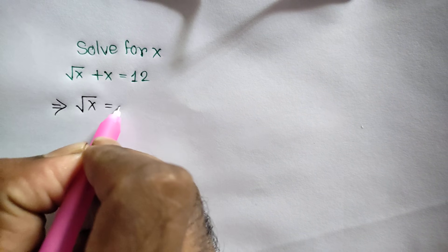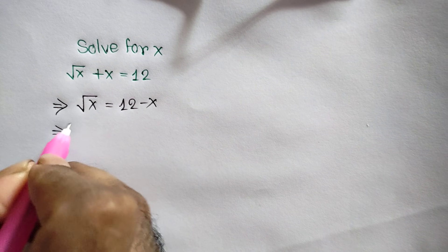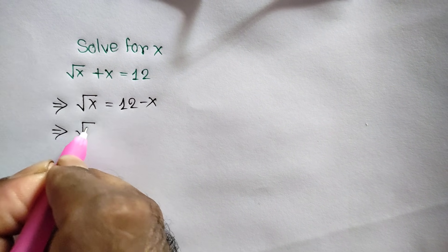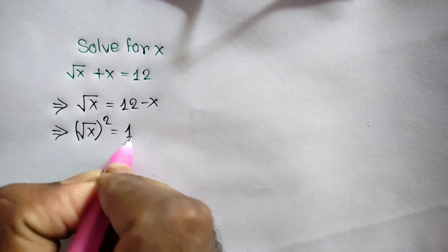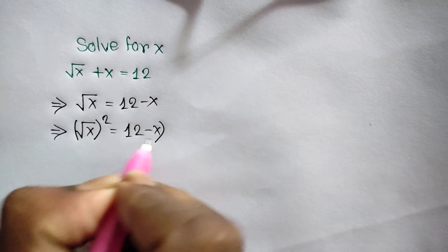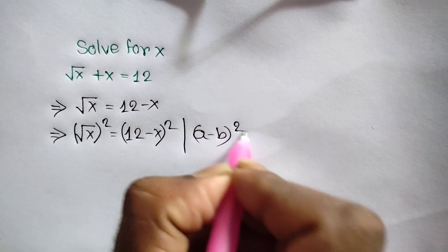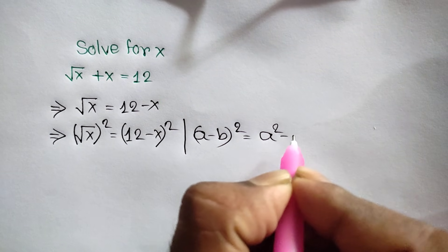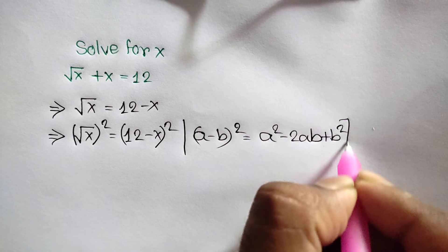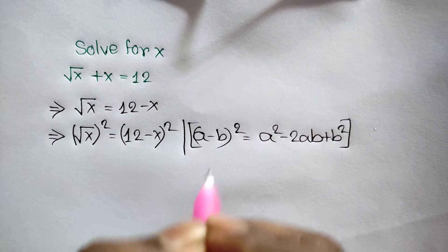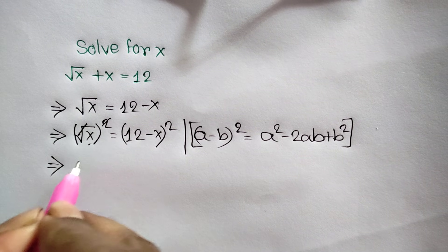Now squaring both sides, we can write square root of x whole square is equal to 12 minus x whole square. We know that a minus b whole square is equal to a squared minus twice a b plus b squared. This square cancels the square root.